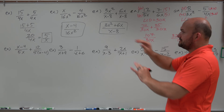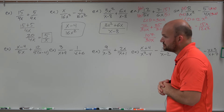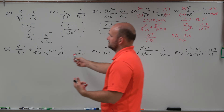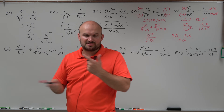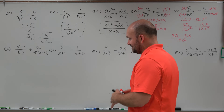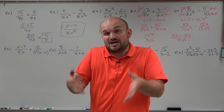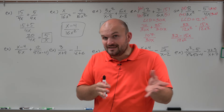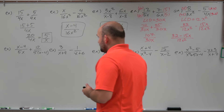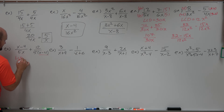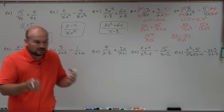Now let's get into the expressions. This is where a lot of students get into trouble — once we have polynomial expressions in the denominators, people start freaking out about the LCD. But if you think about it, an expression like x minus 4 is already in its smallest form. You just need to multiply it by the other expression. So whenever you see an expression in a denominator, put it automatically in the LCD.